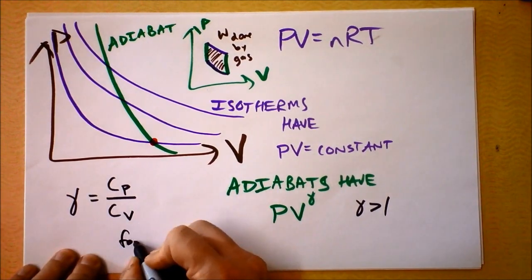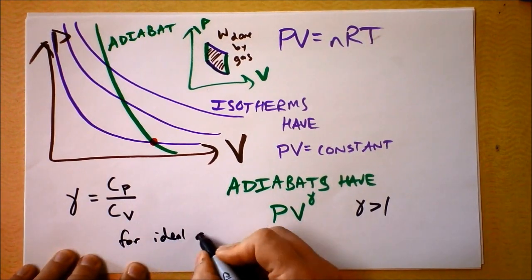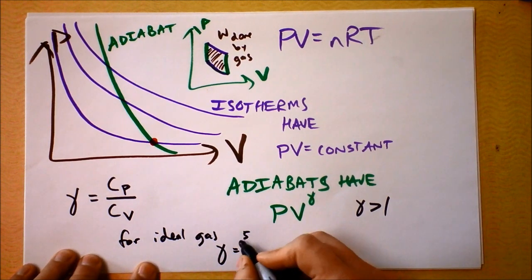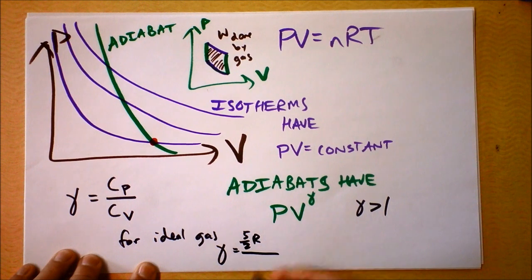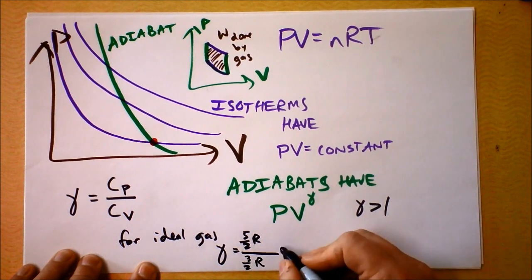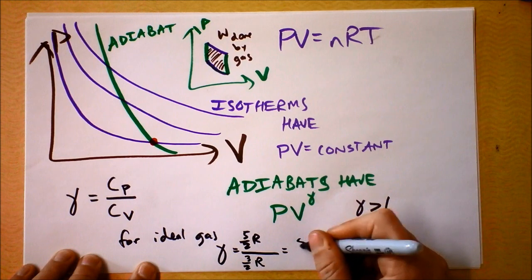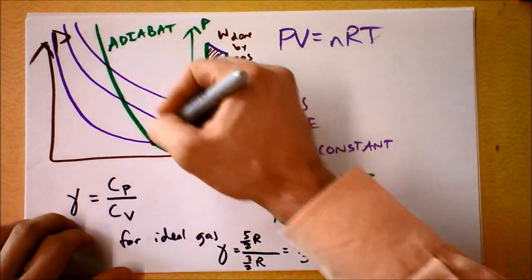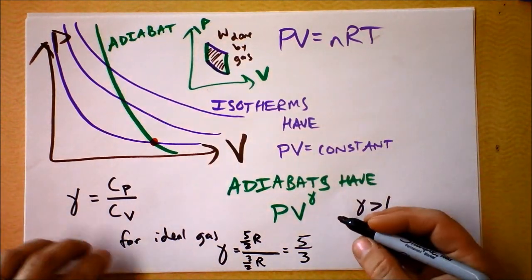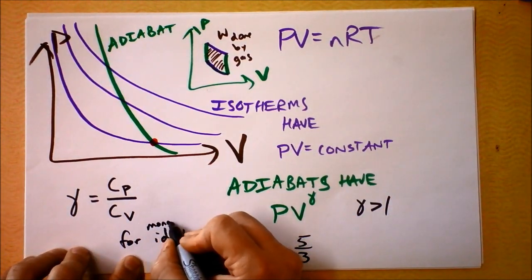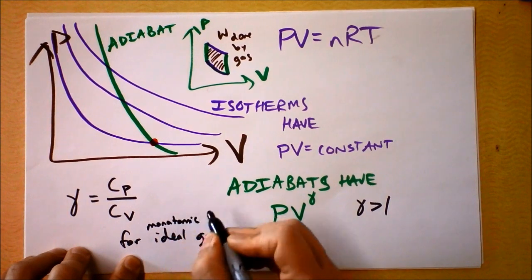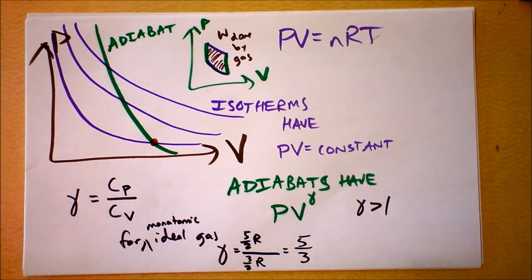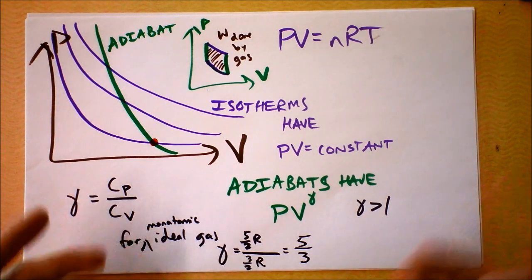For an ideal gas, we're saying that gamma is, I guess it's five halves R divided by three halves R. So in this case, gamma is five thirds. Almost two, actually. So that makes sense that it'd be a much steeper line, and this would be true for monatomic ideal gas. It's a little bit different for other gases, and it ends up being true for monatomic real gases as well. You don't need the fact that the volume actually goes to zero.